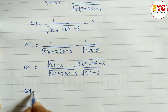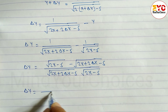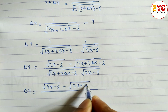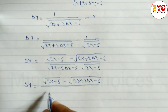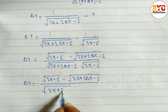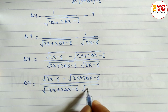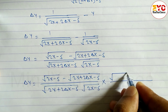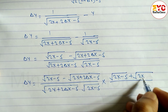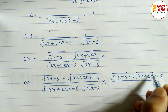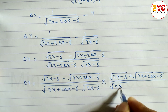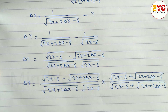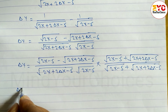In the next step we have to rationalize from the numerator. So we have root under (2x - 5) minus root under (2x + 2 del x - 5) divided by root under (2x + 2 del x - 5) times root under (2x - 5). We rationalize by multiplying by the conjugate: root under (2x - 5) plus root under (2x + 2 del x - 5).